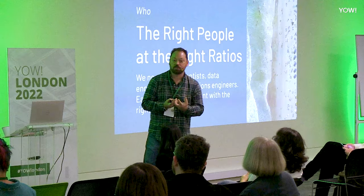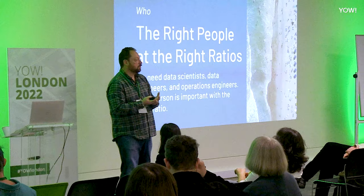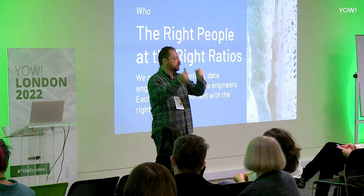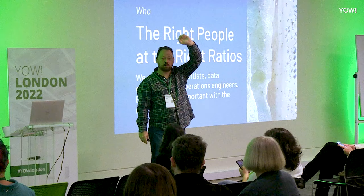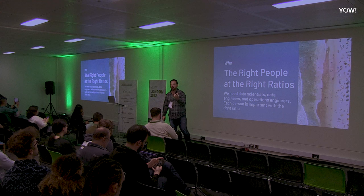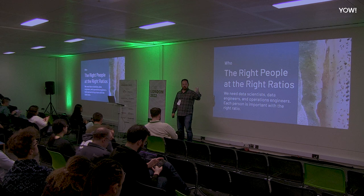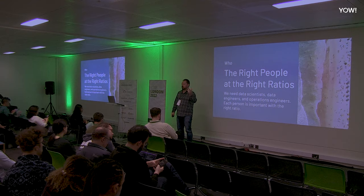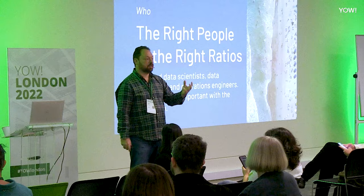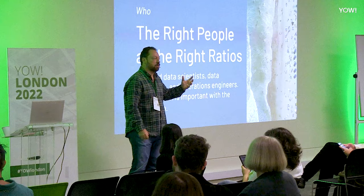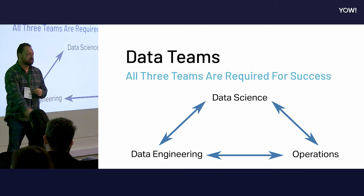So what is the right ratio? My general recommendation is five to ten data engineers per one data scientist. This is a pretty significant inversion of what we generally see in the industry — one data engineer trying to serve a group of ten data scientists. That ratio reflects how much more data engineering work goes into machine learning and AI than the data science itself, borne out even by Google research papers.